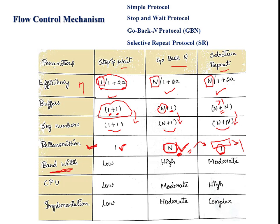Bandwidth represents the total number of bits that can be transmitted in a medium. In stop-and-wait, we process only one packet at a time, so bandwidth utilization is less. Whereas in go-back-N and selective repeat, bandwidth is utilized more than in stop-and-wait, because multiple packets are transmitted in a given time using the sliding window concept.